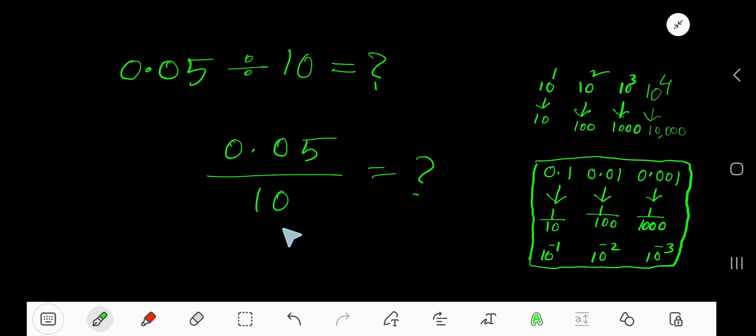Count the number of zeros and move the decimal from right to left. Division means repeated subtraction, and in repeated subtraction, the value of the dividend is decreased.